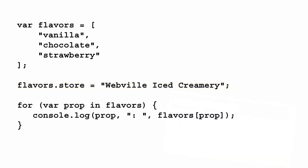We can use a for in loop to inspect the flavors array a little more closely. In Head First JavaScript Programming, we show you how you can use the for in loop to iterate through all the properties in an object. Well, an array is an object too, so we can use the for in loop to iterate through all the properties of an array.